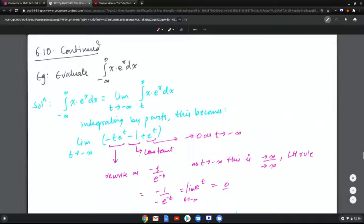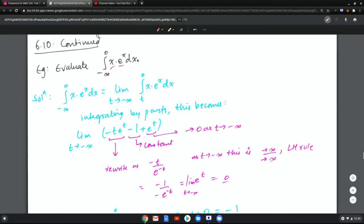So you want to evaluate negative infinity to 0, x times e to the x. Now recall you have to use integration by parts.